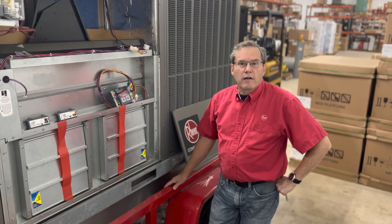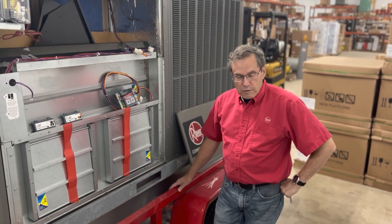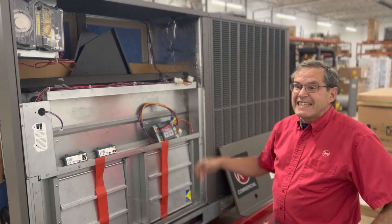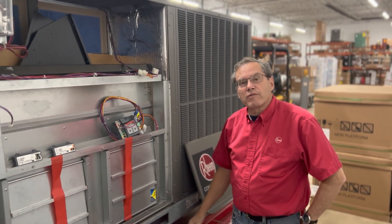Good morning. I'm Glenn with Young Supply Company. I am the Rheem technical support person. Today we're going to talk about installing the controls for an economizer in our RGED series 7.5 through 12.5 ton rooftop.